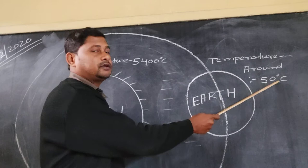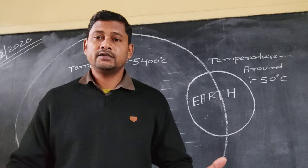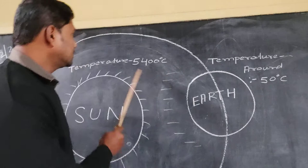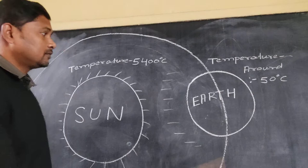The temperature on the Earth is around 50 degree Celsius. From this you can imagine, when we are having on the Earth 37 degree Celsius, 40 degree Celsius, or 45 degree Celsius hot, then how much hot we feel. And if the temperature is 5400 degree Celsius, then how much hot the sun is.